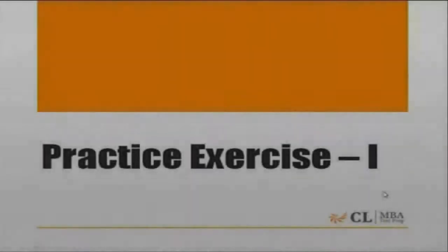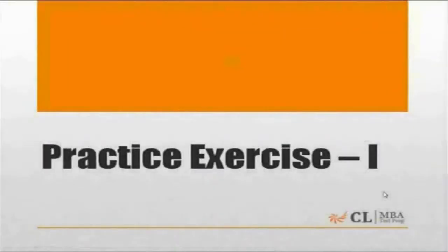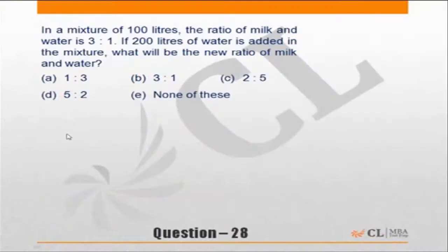Let's move to practice exercise 1. In a mixture of 100 liters, the ratio of milk to water is 3 to 1. If 200 liters of water is added to the mixture, what is the new ratio of milk and water?